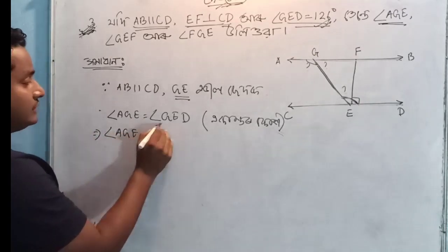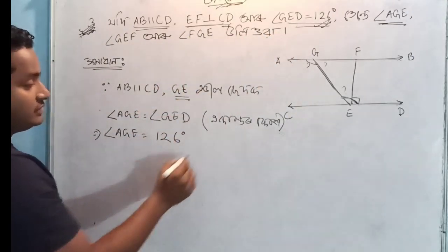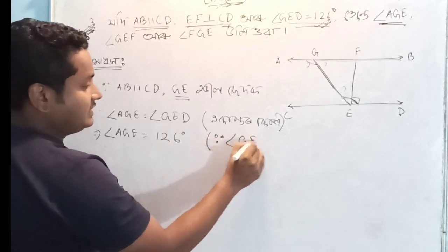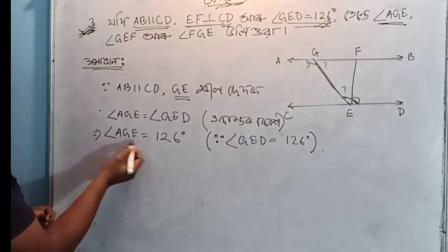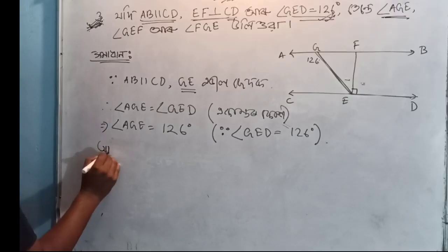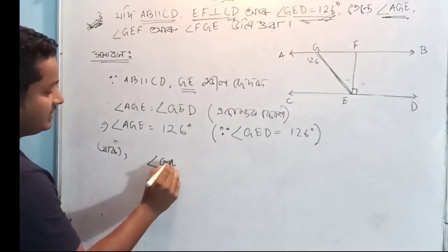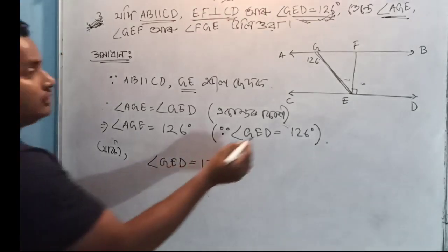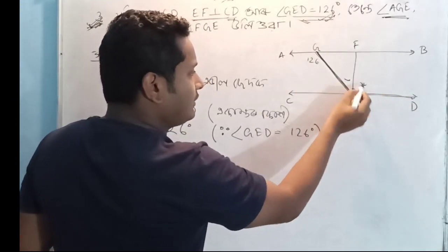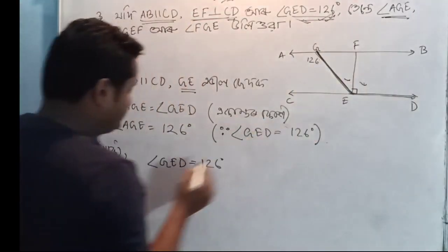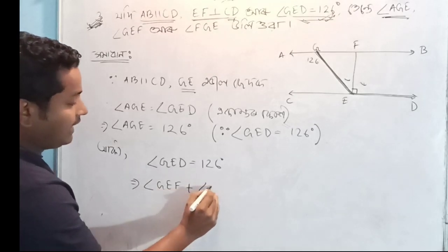So AGE is equal to 126 degrees. GEF, FED.